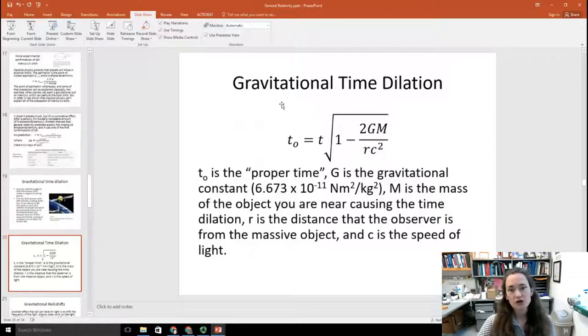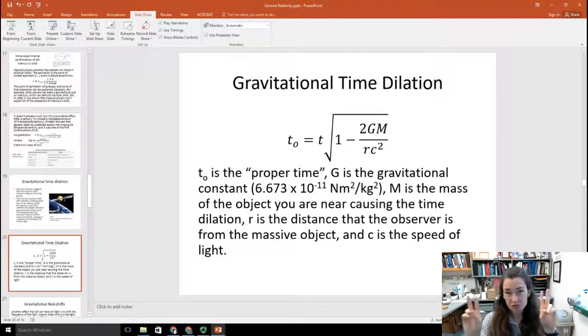So you can sort of estimate gravitational time dilation using this simple formula. Here, t-naught is your proper time. You might remember the idea of proper time from modern physics 1 when we did special relativity. g is the gravitational constant, 6.673 times 10 to the minus 11. Here, m is the mass of the object that you're near that's really causing the time dilation. Here on Earth it would be the mass of Earth. r is the distance that the observer is from that mass of object. And c is the speed of light. So this would give you your prediction of gravitational time dilation.